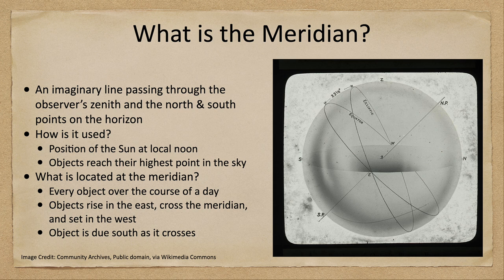What is the meridian? Essentially, it is an imaginary line that passes through the observer's zenith as well as the north and south pole points on the horizon, and will also pass through the celestial poles. It is a great circle on the sky which divides the sky into two.